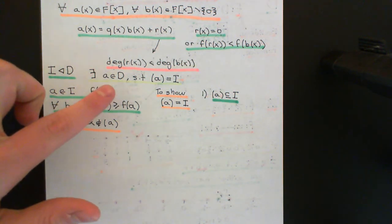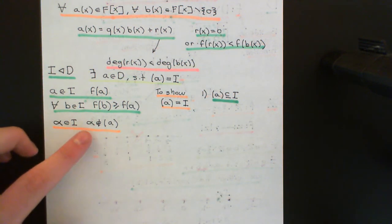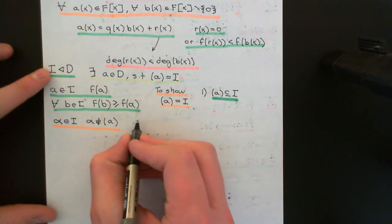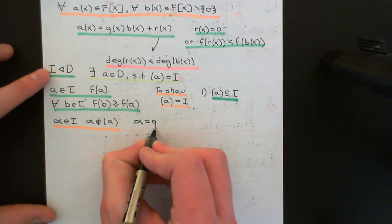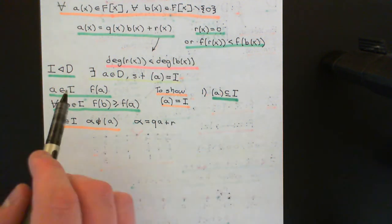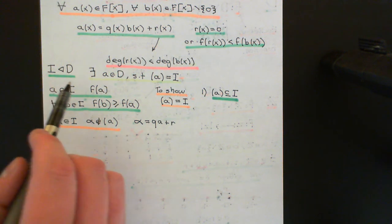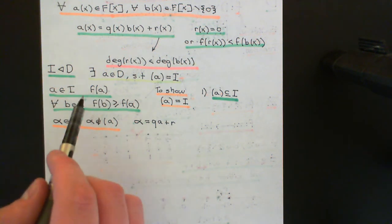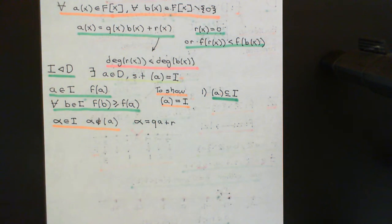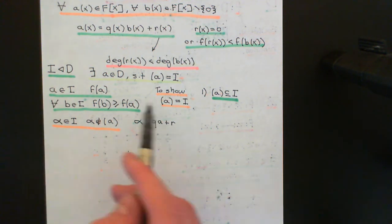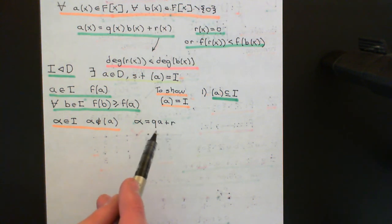Because our Euclidean domain capital D is indeed Euclidean, we can write alpha as some multiple of A plus a remainder — so alpha equals Q times A plus R. I should stress that A was not equal to the zero element. Really, I should have split this into cases: there is the case of the zero ideal, in which case the only element is zero and it's trivially a principal ideal generated by zero. For all other ideals there is an element that isn't zero, and A is that element since we picked it for having the smallest possible Euclidean size function.